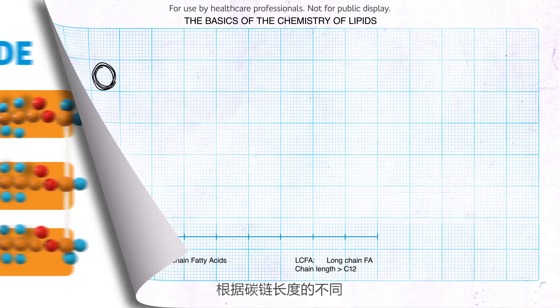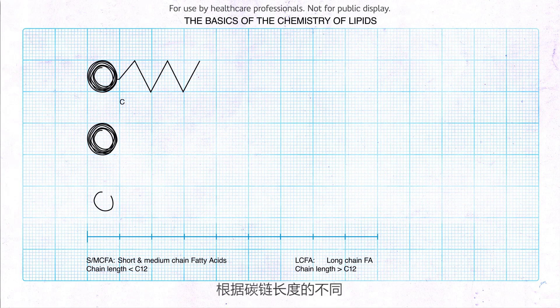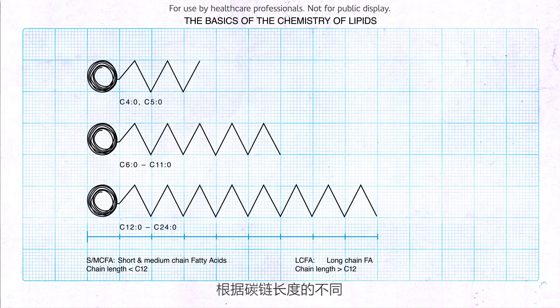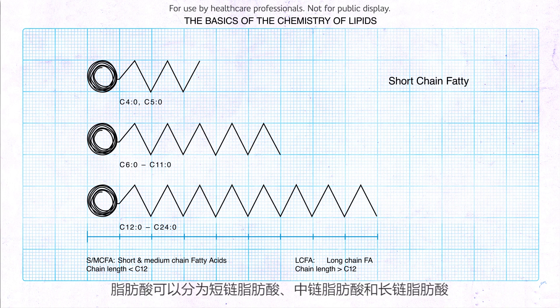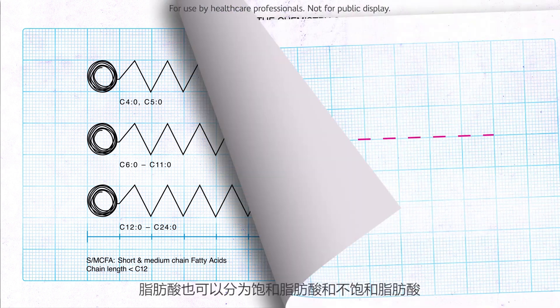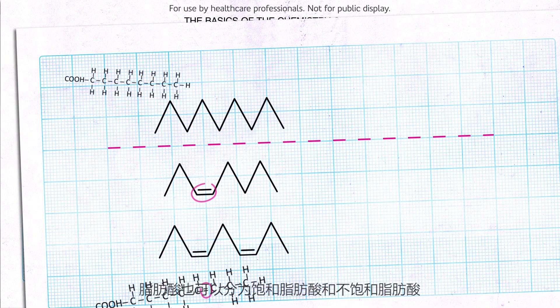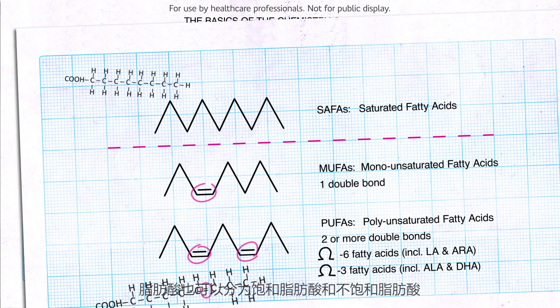Fatty acids can have different lengths. We divide them into three different groups: short-chain fatty acids, medium-chain fatty acids, and long-chain fatty acids. Fat can also be divided into saturated and unsaturated fatty acids.